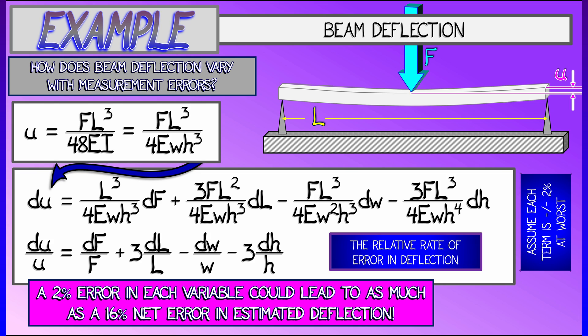And notice also how sensitive this error in u is to the different variables. It's relatively not so sensitive to the force f and the width of the beam w, but the length l and the height of the beam h, du over u depends much more sensitively on that. And if you look at what we have in this magical cancellation, you can sort of start seeing a pattern here,